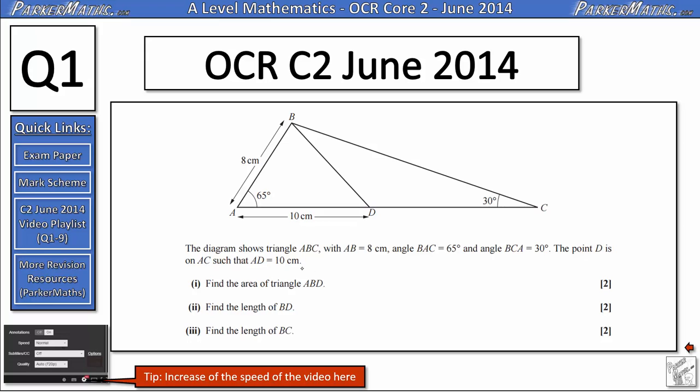In question 1, the diagram shows triangle ABC with AB equals 8cm, angle BAC equals 65 degrees, angle BCA equals 30 degrees, and the point D is on AC such that AD is 10cm. So all the information in this first sentence is already given on the diagram up here.